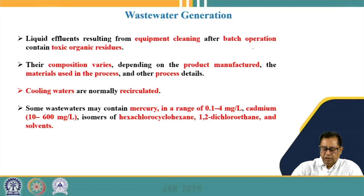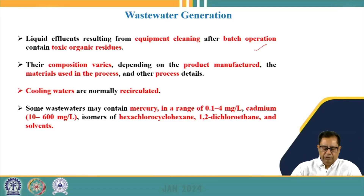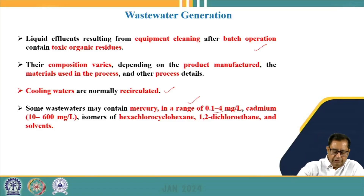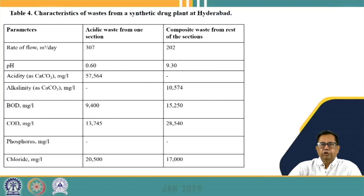Wastewater generated after batch operations may contain toxic organic residues, and its composition varies depending on the product manufactured, materials used, and the process employed. Cooling waters are normally recirculated and do not enter the wastewater. Some wastewater has been reported to contain mercury in the range of 0.1 to 4 mg/L, cadmium in the range of 10 to 600 mg/L, isomers of hexachlorocyclohexane, 1,2-dichloroethane, and other solvents.